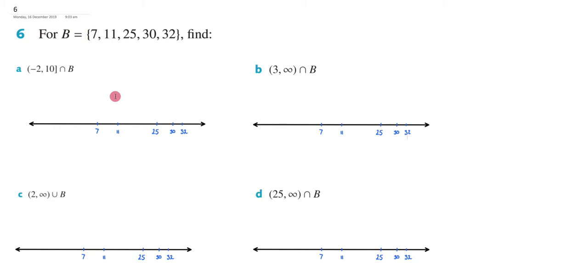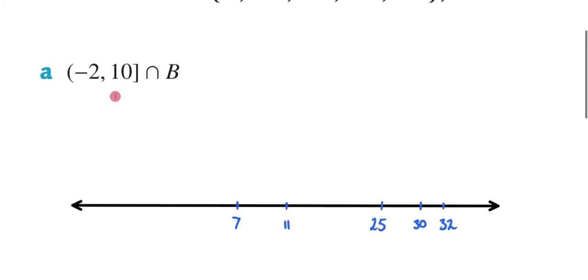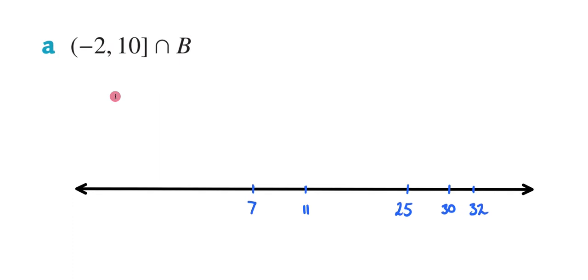So let's now zoom in to question A. And what we're being asked to do here is find the intersection point of negative 2 and 10 with B. So let me begin by putting in this interval. So it's going to be negative 2 all the way to 10, and I have a round bracket here, so it's going to be an open circle, and then I have a closed bracket here, a square bracket, so it's going to be a closed circle.